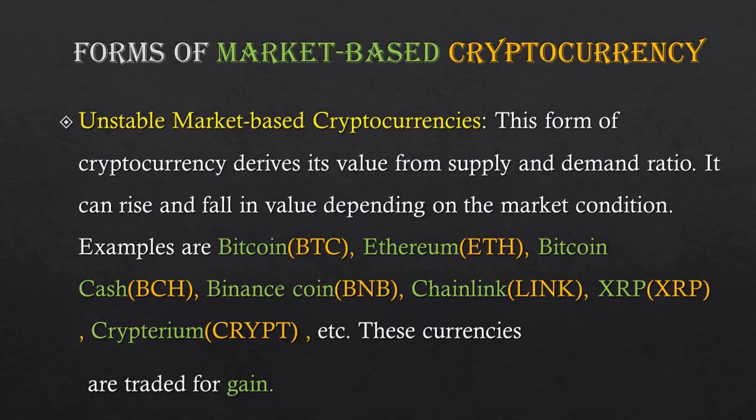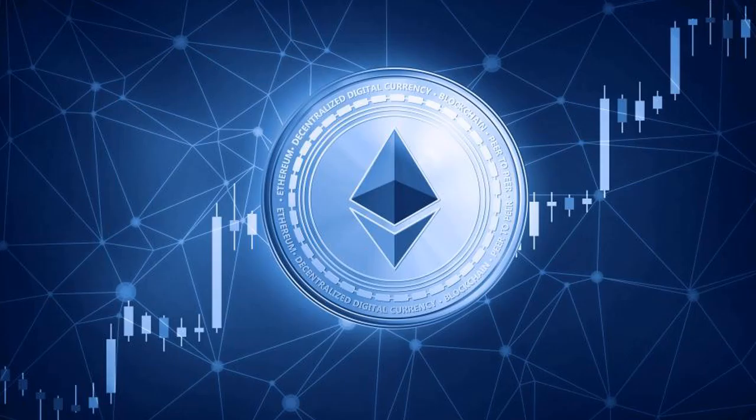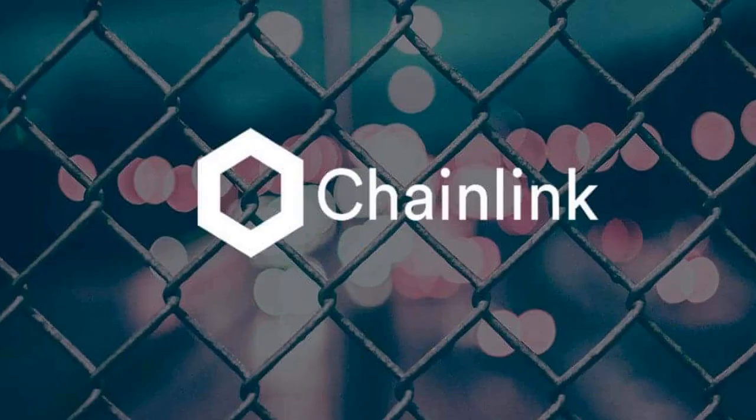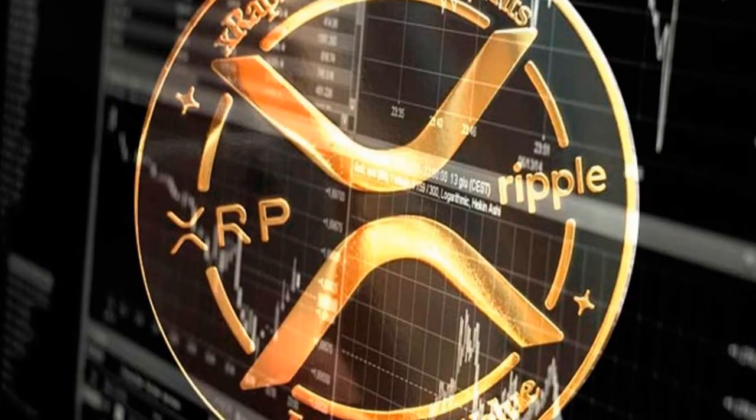People need a place to stable their assets so that when their money is parked there, its value hasn't dropped. Unstable market-based cryptocurrencies derive their value from demand and supply ratio, and it is these currencies that traders invest in for gains — like Bitcoin, Ethereum, Bitcoin Cash, Binance Coin, Chainlink, and XRP.